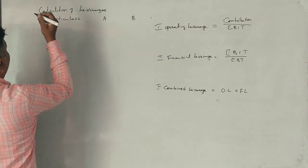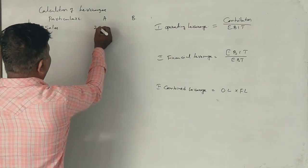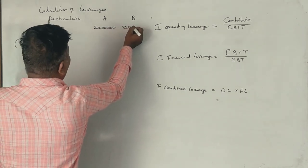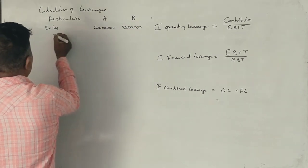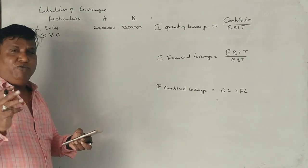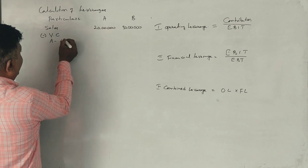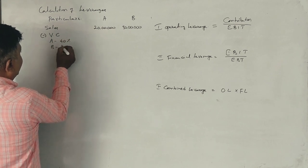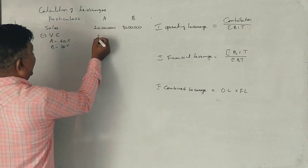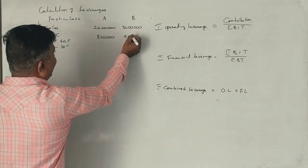First, sales: Firm A is 20 lakhs, Firm B is 30 lakhs. Variable cost: Firm A is 40%, Firm B is 30%. 20 lakhs times 40% is 8 lakhs. 30 lakhs times 30% is 9 lakhs.